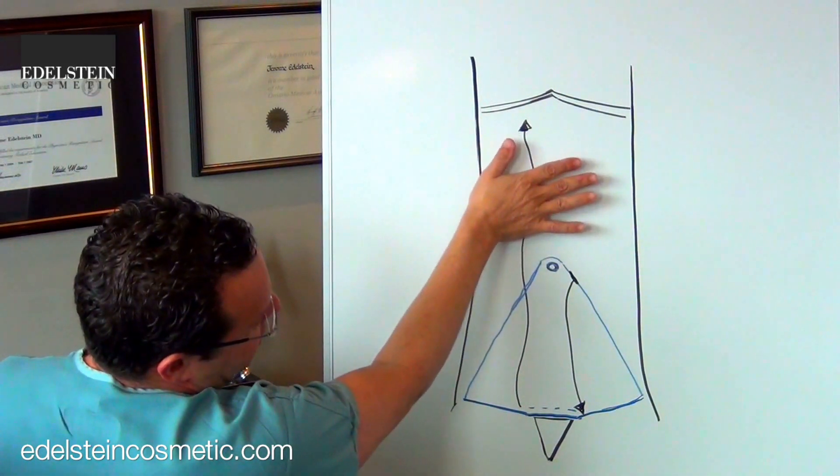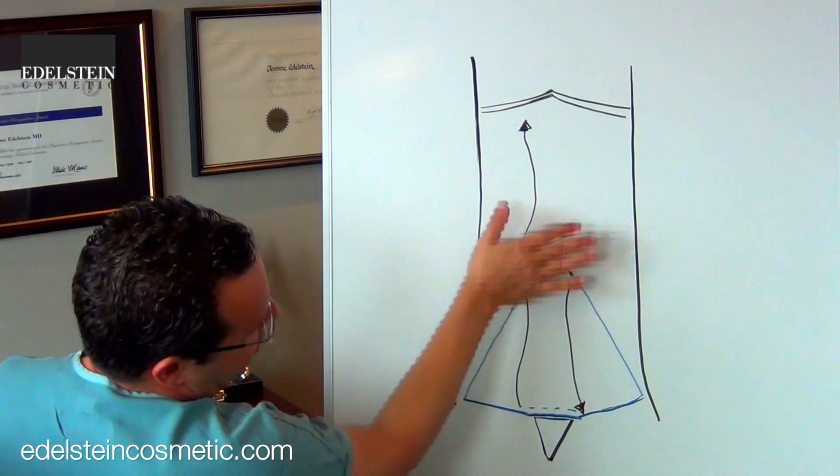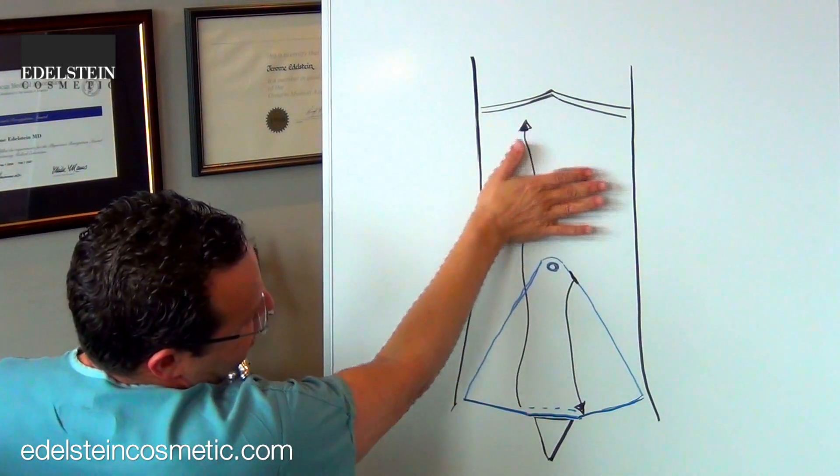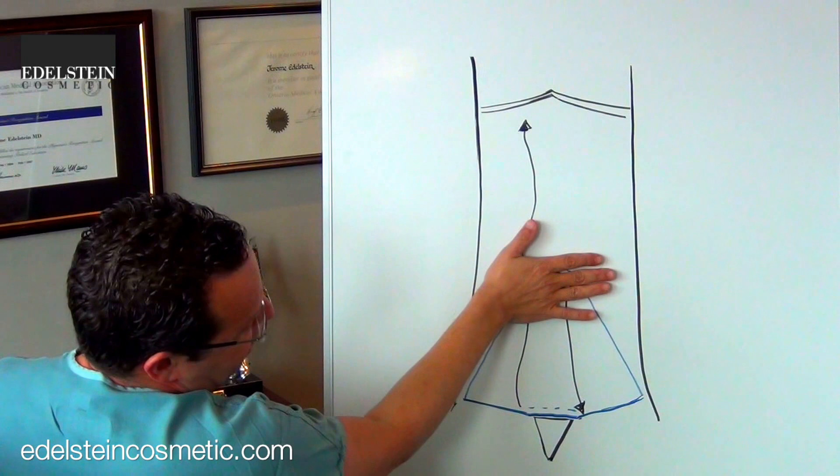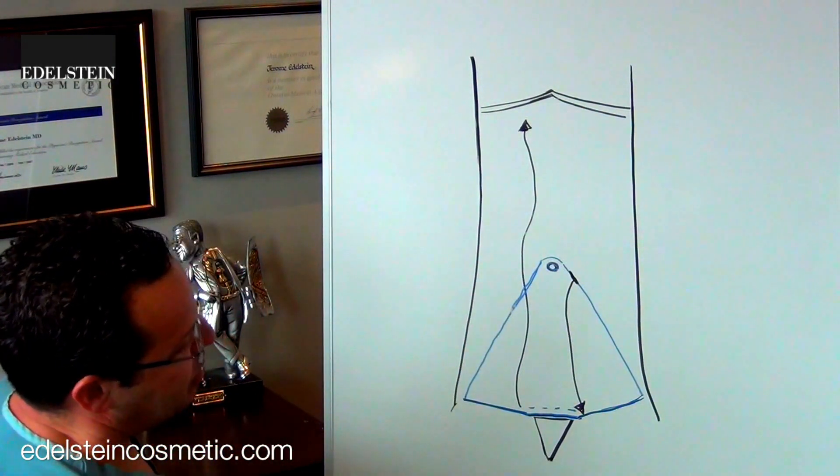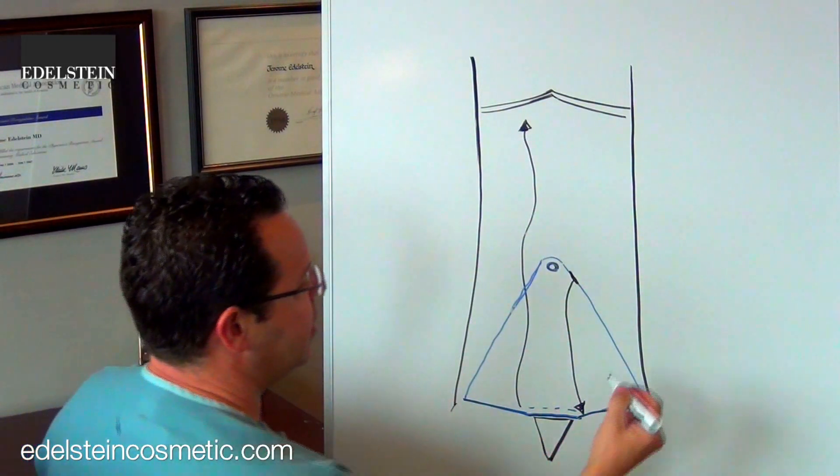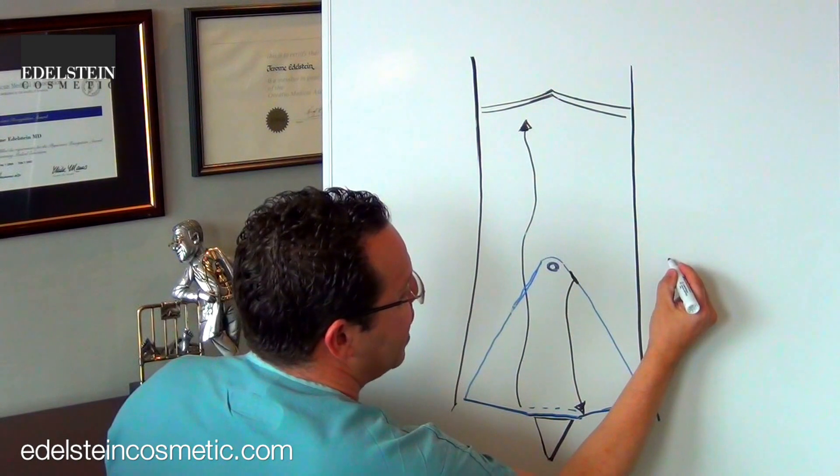This edge here is going to be pulled all the way down to here. So the skin that's up here above your belly button is going to get stretched all the way down to the pubic area. The skin here will be covering your belly button temporarily, and I need to make a new opening for the belly button.